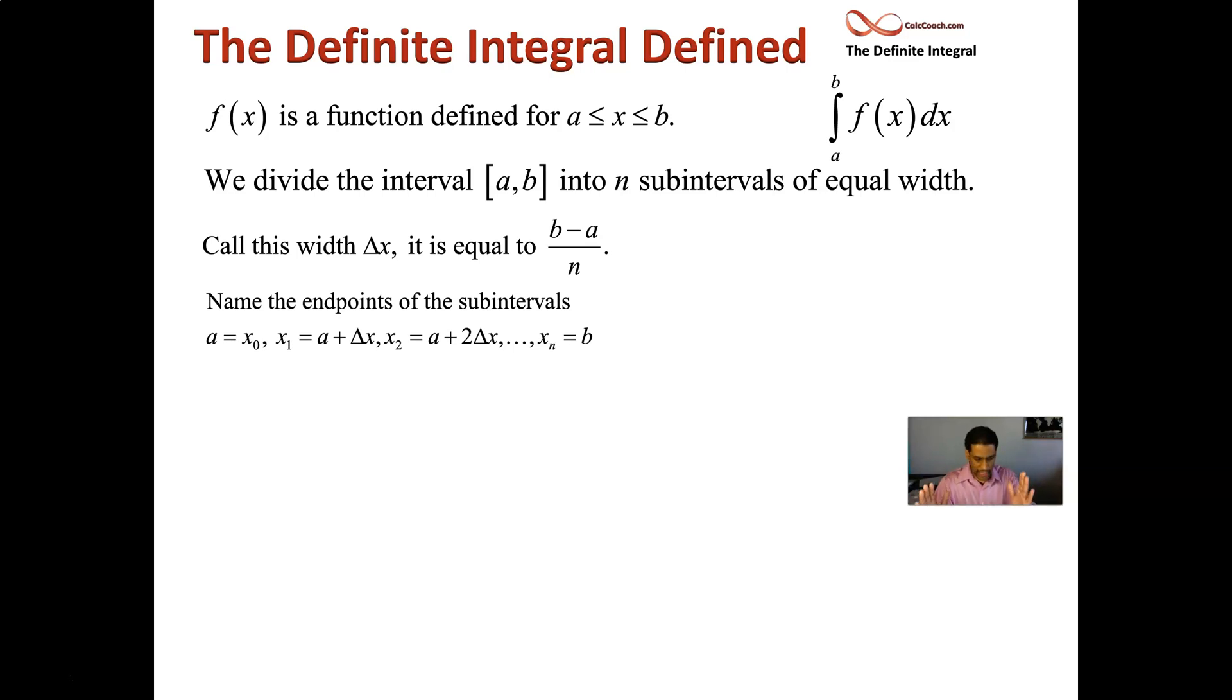Now with that, we have subintervals now, n of them. And so we have to name these places where we make these marks. Here's a number line. It's going to help us out. So a is on the left, b is on the right.